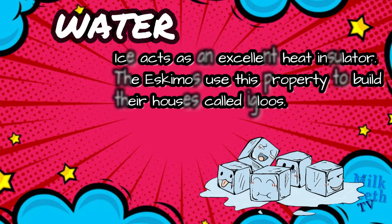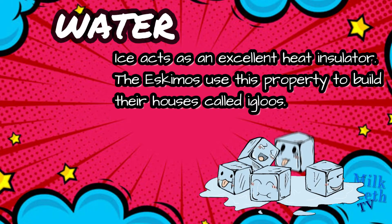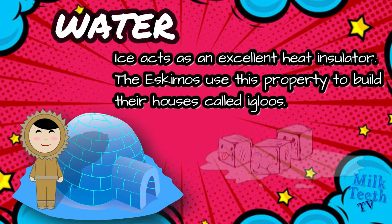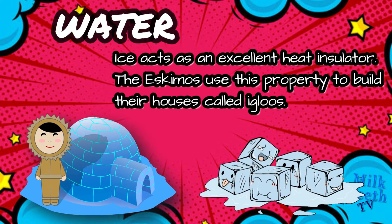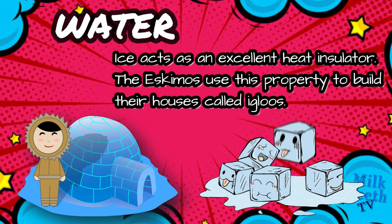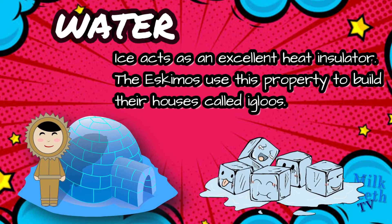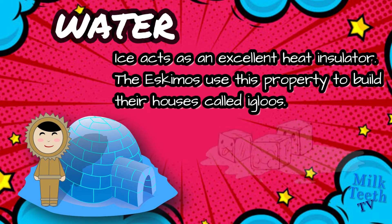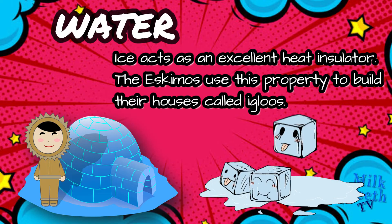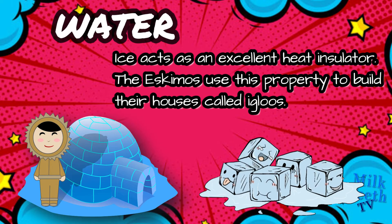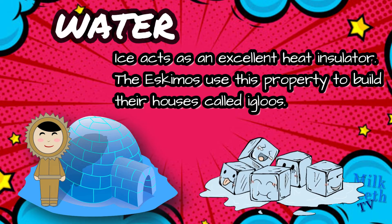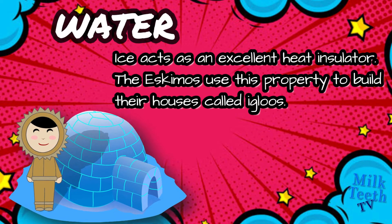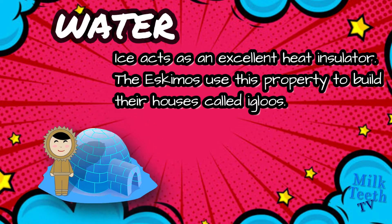Solid water, or ice, acts as an excellent heat insulator. The Eskimos use this property to build their houses, which are called igloos. These igloos are made up of snow and ice.